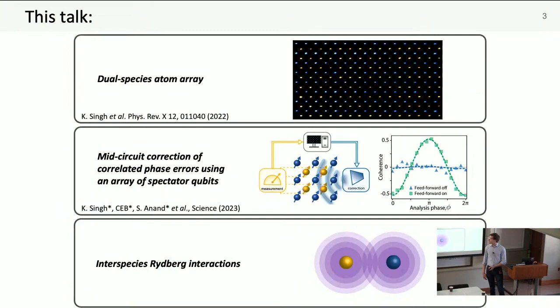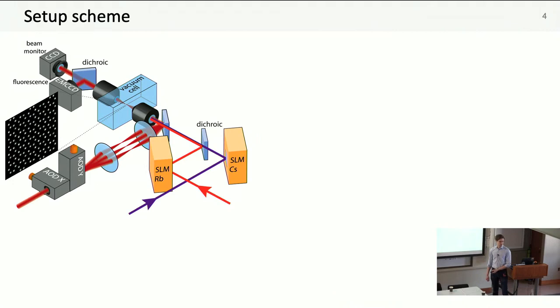So I will briefly introduce our experiment and how we run it. Then I'll talk about our first protocol results implementing this spectator qubit protocol, and I'll tell you about how some of these new capabilities allow us to do that. Finally, I'll tell you about really recent experiments, very raw data we're doing right now, starting to explore inter-species Rydberg interactions.